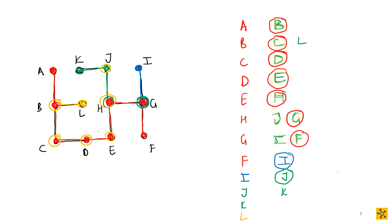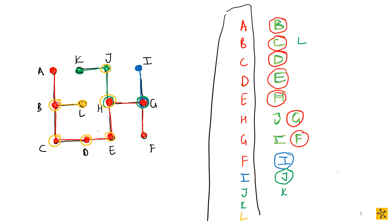When you write down how you found your spanning tree using depth first search, you list the order that you traversed the vertices. So in this case the order is: A, B, C, D, E, H, G, F, I, J, K, and L.